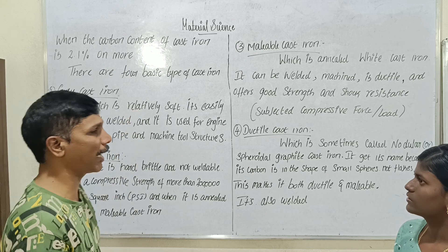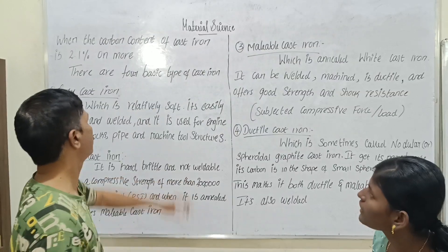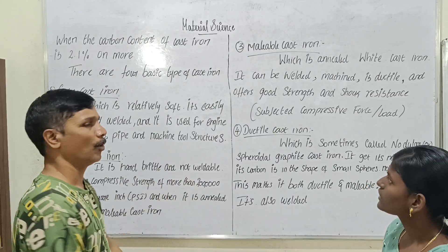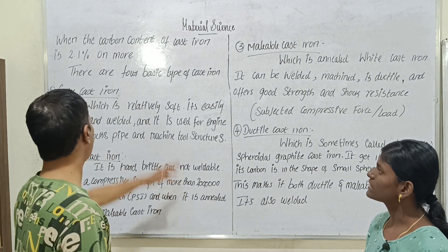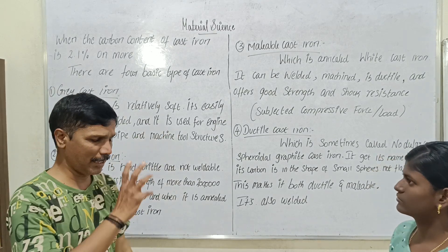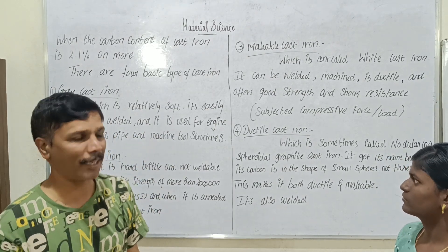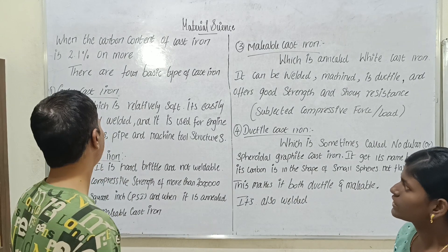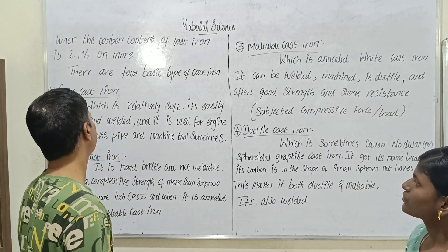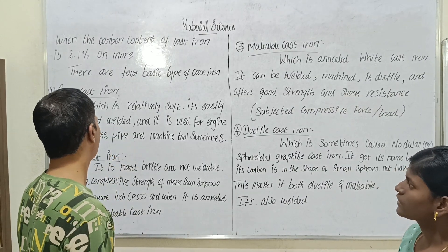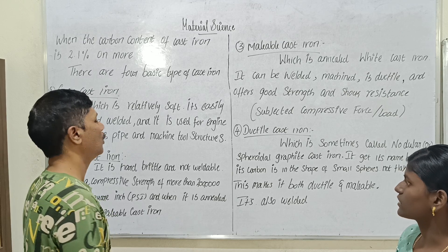How do we describe gray cast iron? It is relatively soft — very soft. It is easily machined; machinability is good. And weldability is good. It is used for engine cylinder blocks, pipes, and machine tool structures.